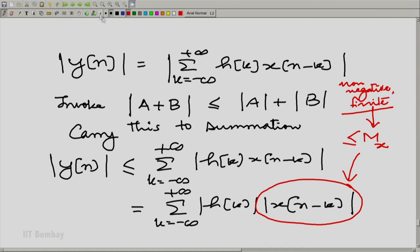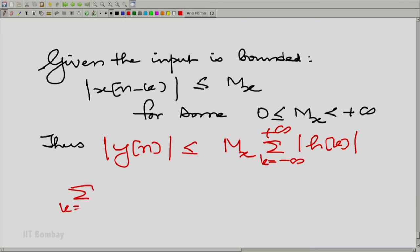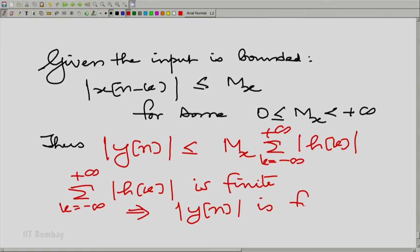And M_x is a non-negative finite quantity. Finite is important. And therefore, we clearly have mod y(n) is less than or equal to M_x summation k going from minus to plus infinity mod h(k). So it is very clear that if summation k going from minus to plus infinity mod h(k) is finite, then mod y(n) is finite. It is very clear.